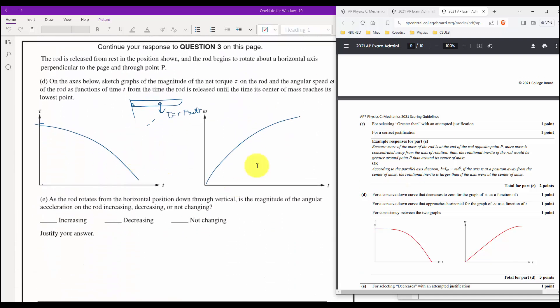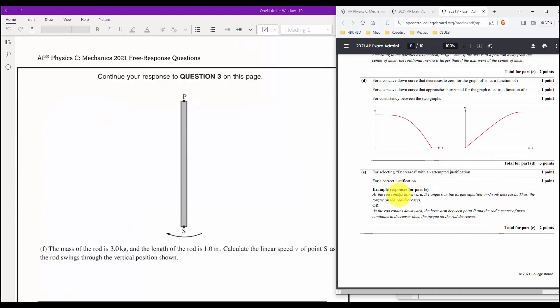And then the same thing for D, I even screwed these graphs up at first. So possibly, possibly for these point, maybe. There's a lot of people not quite sure what to do for that. So the torque and the omega ones. And for consistency between the two graphs, I don't think we have consistency. I'm just going to say we got one point there. And then for E and F, yeah, we didn't even look at that.